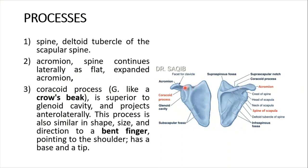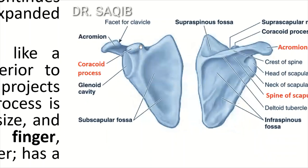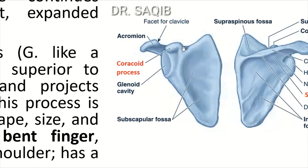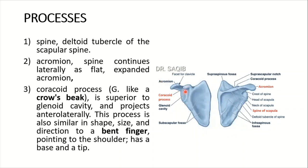The coracoid process is very important. It is derived from a Greek word meaning like a crow's peak. It is superior to the glenoid cavity and projects anterolaterally. This process is also similar in shape, size, and direction to a bent finger pointing to the shoulder. It has a base and a tip — you can see clearly this crow's beak, the coracoid process.